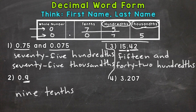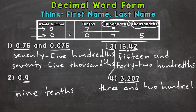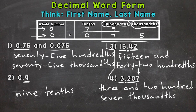Lastly, number four. Start with the whole number — read it as is: three. Remember, the word and represents that decimal, so: three and. Read the decimal number as is for the first name: 207. The last name is where that decimal ends — the seven sits in the thousandths. So: three and 207 thousandths. That's how you write decimals in word form. Remember: first name, last name.